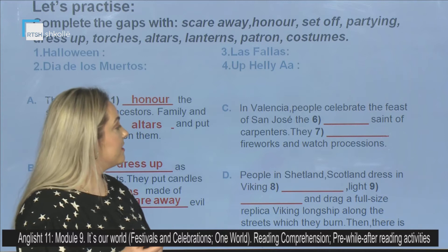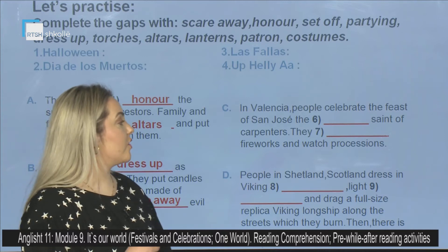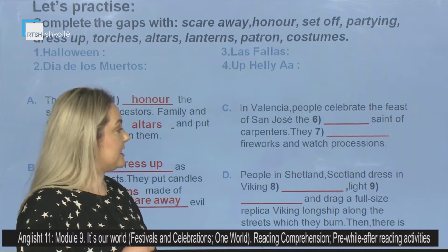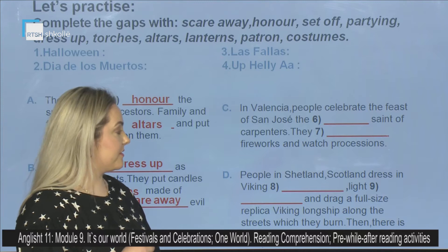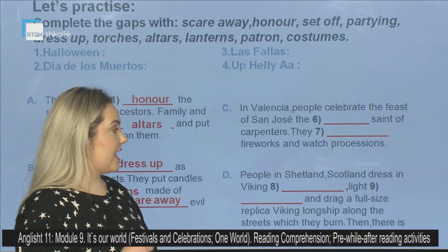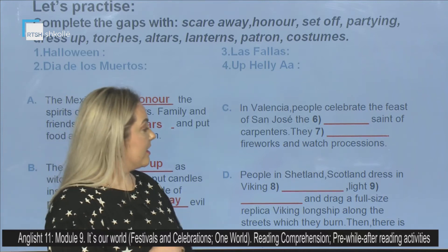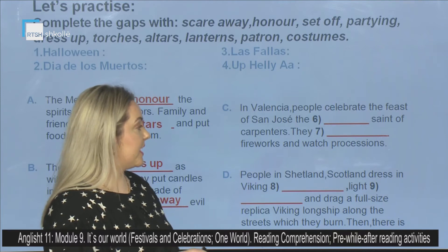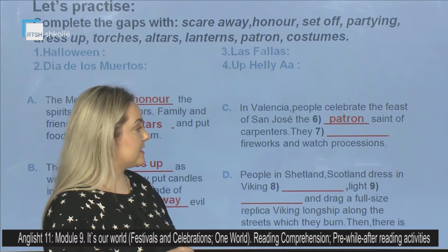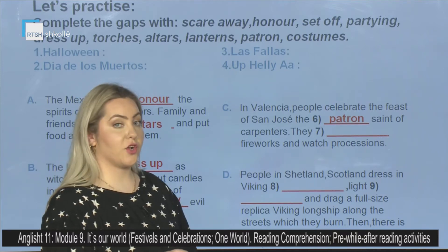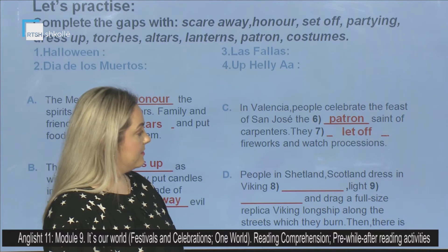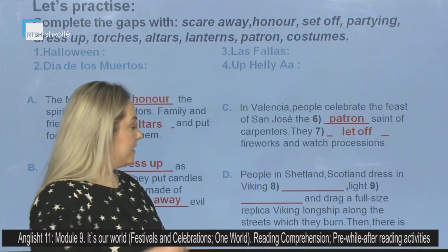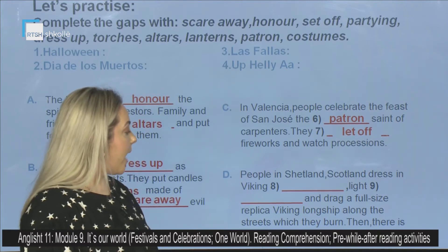In Valencia, people celebrate the feast of San Jose, the — you should complete number six — saint of carpenters. They — you should complete number seven — fireworks and watch processions. The answers are: six, patron; seven, let off fireworks.